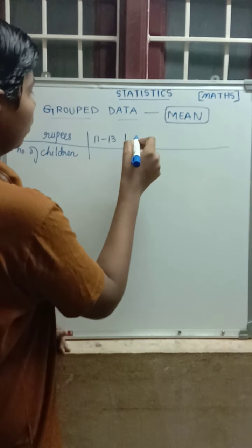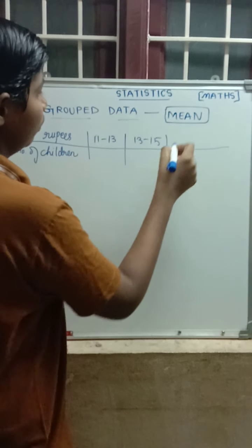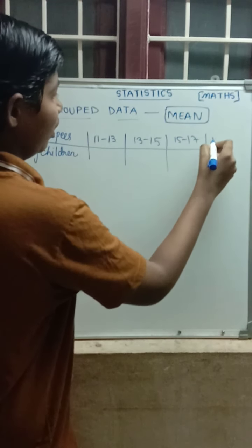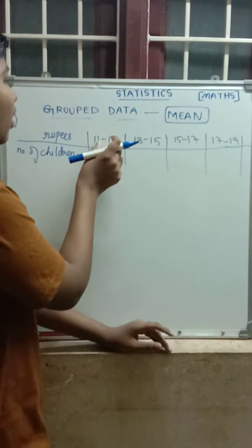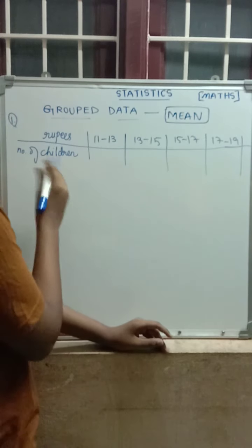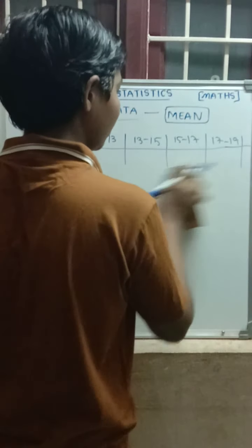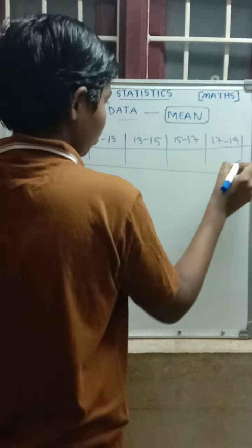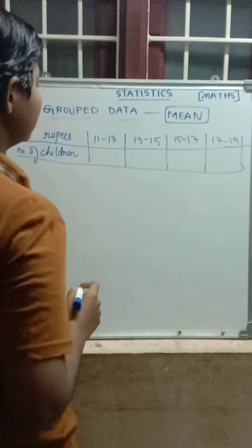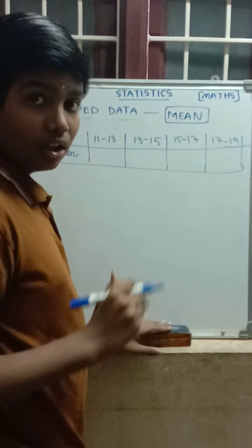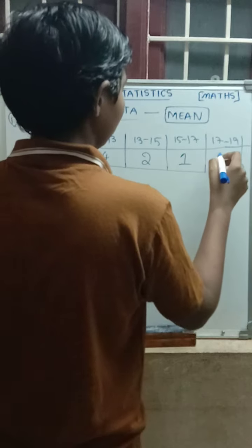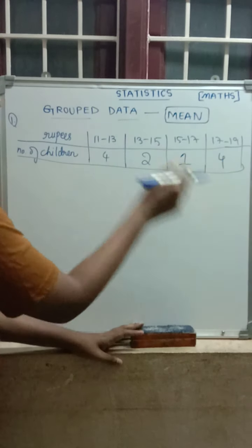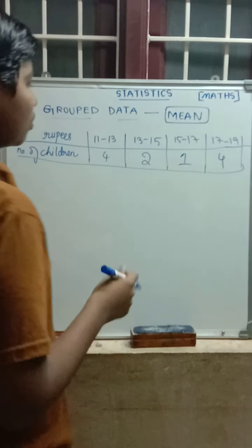The class intervals for rupees are: 11 to 13, 13 to 15, 15 to 17, and 17 to 19 — a gap of 2 throughout. As I said in the previous video, for the whole sum there should be the same gap. The number of children frequencies are 4, 2, 1, and 4. Since the frequency 4 is repeated, we can take another value and will take 5 for the last one.